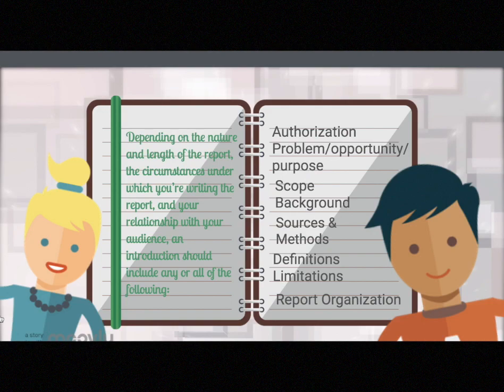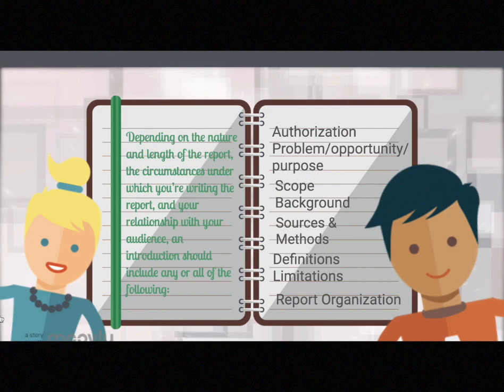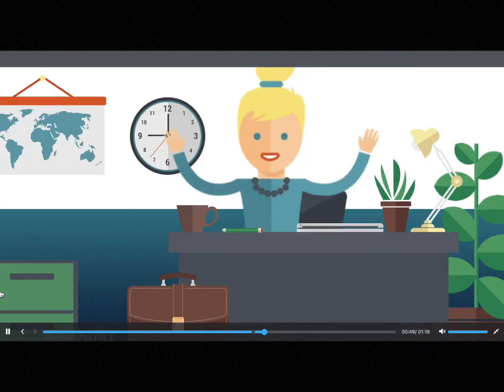Problem, opportunity, and purpose — what is the reason for the written report and what is the main goal as a result of writing it? Scope — what is and what isn't covered in the report. Background — any relevant historical conditions or factors that can help readers grasp the report's message. Sources and methods — what sources of information were used and how was such information collected.